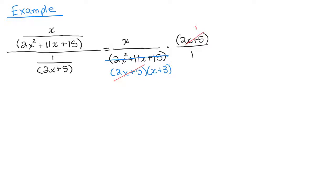So what I have left in the numerator is just the X times 1, which is X. In the denominator, I have 1 times X plus 3 times 1. That's simply X plus 3. So that's using the first method.